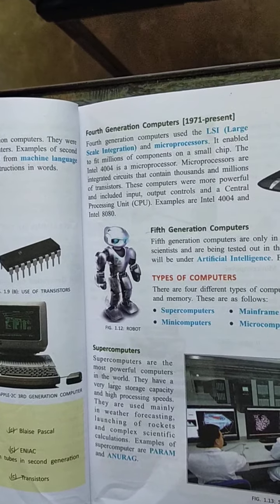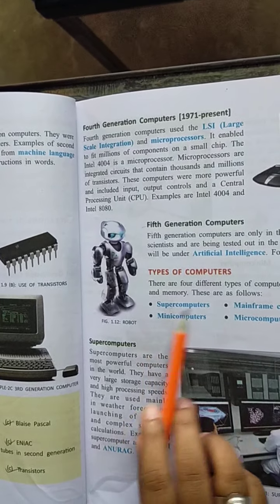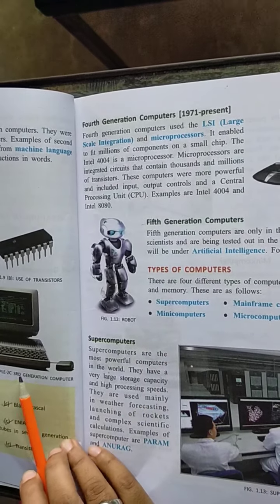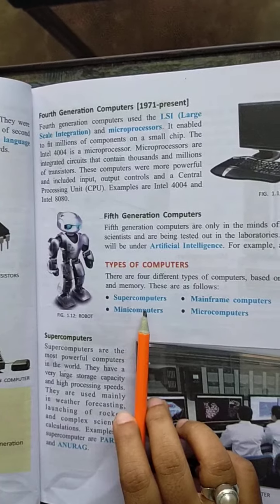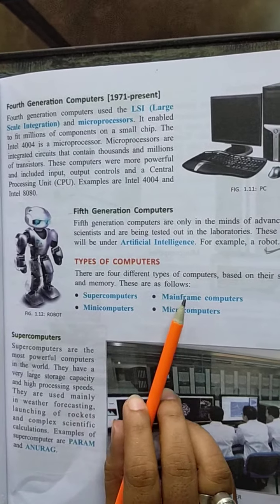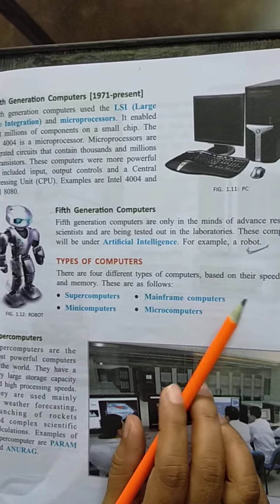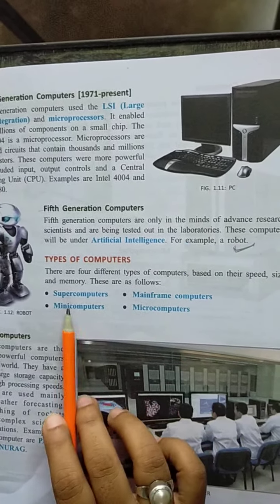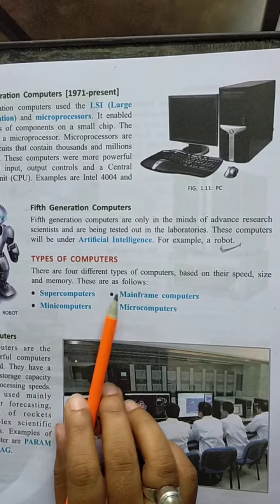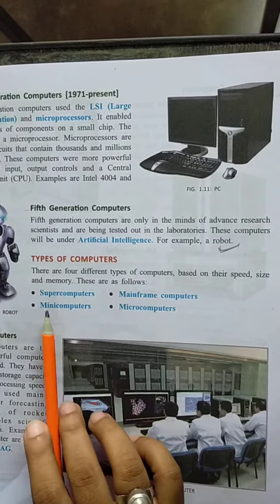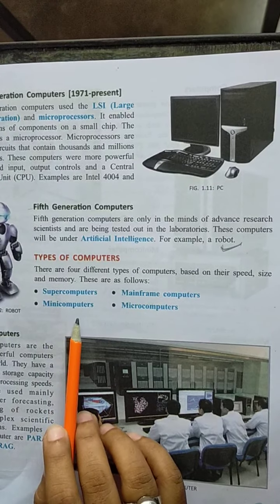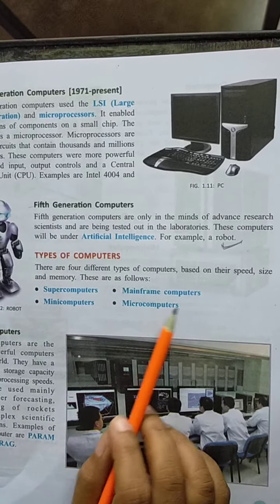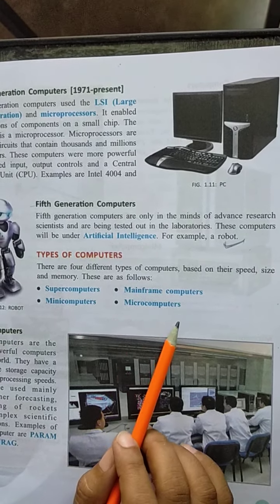Today we are going to discuss about types of computer. There are 4 types of computer based on their speed, size and memory. These are as follows: supercomputer, miniframe computer, mainframe computer, and microcomputer.